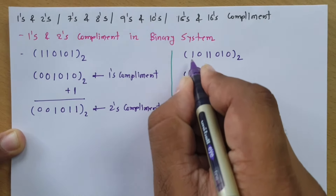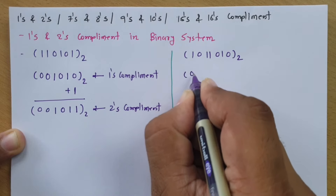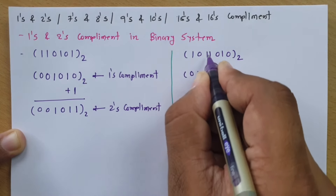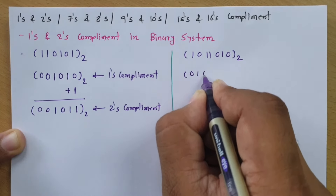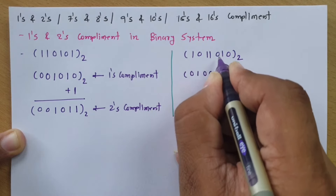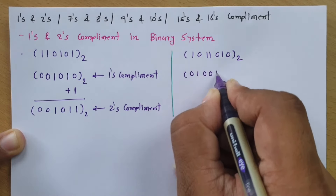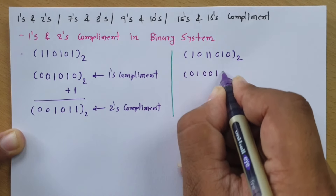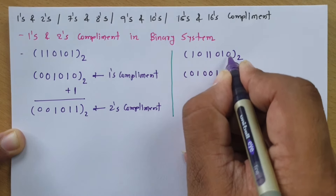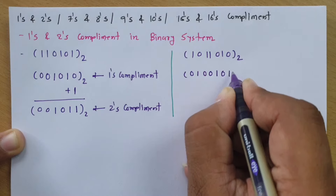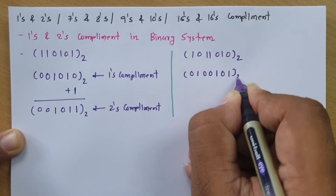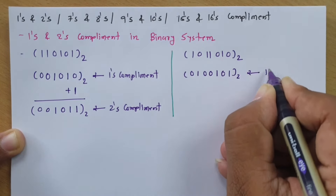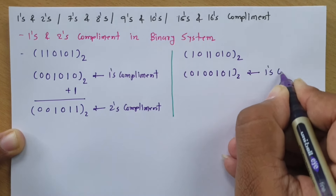So this 1 becomes 0, this 0 becomes 1, this 1 1 becomes 0 0, this 0 becomes 1, this 1 becomes 0, and this 0 becomes 1 — giving us the 1's complement.